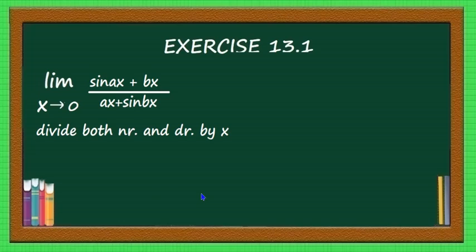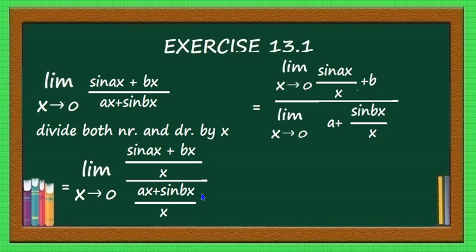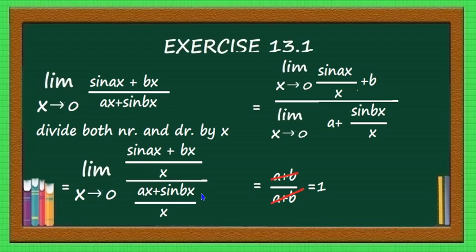After dividing by x, the problem reduces to: limit x→0 of (sin(ax)/x + b) divided by (a + sin(bx)/x). Using the quotient of limits rule, this equals limit x→0 of (sin(ax)/x + b) divided by limit x→0 of (a + sin(bx)/x). Since limit x→0 of sin(ax)/x = a and limit x→0 of sin(bx)/x = b, the numerator is a + b and the denominator is also a + b. They cancel, giving the answer 1.